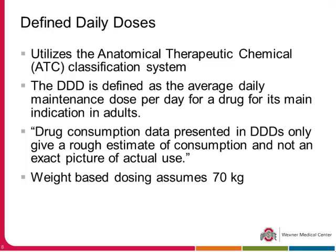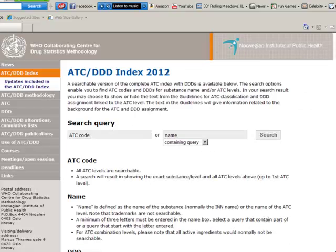One issue is that trying to measure actual antimicrobial use using the DDD system is problematic. It's all based on a 70-kilogram adult assumption. You can go to the WHO website, enter a drug name, get its ATC code, and see what the defined dose is.